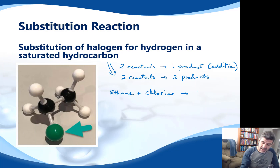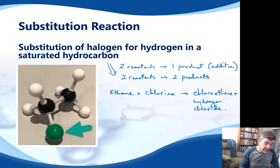Now, unlike addition reactions, when that happens we end up with two products. So we've started with two reactants and ended up with two products. The two products are the halogenated alkane and the hydrogen halide. In this case, we would have chloroethane and hydrogen chloride — incidentally not hydrochloric acid — as the second product.